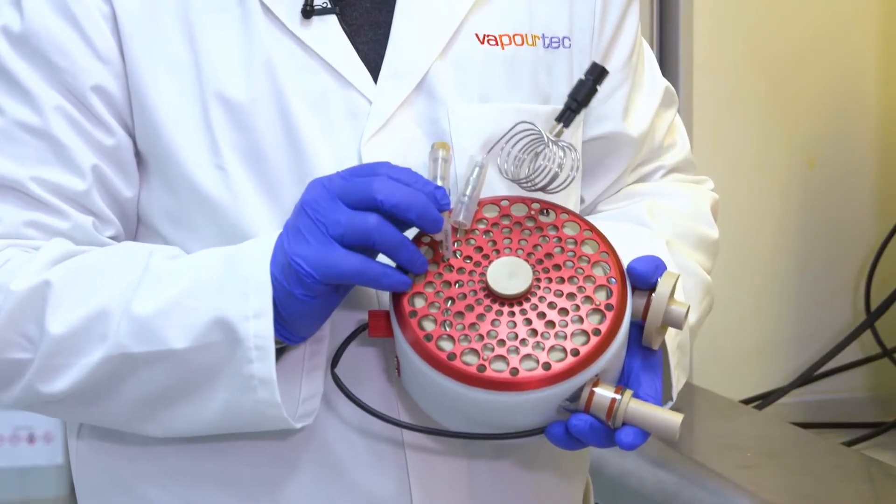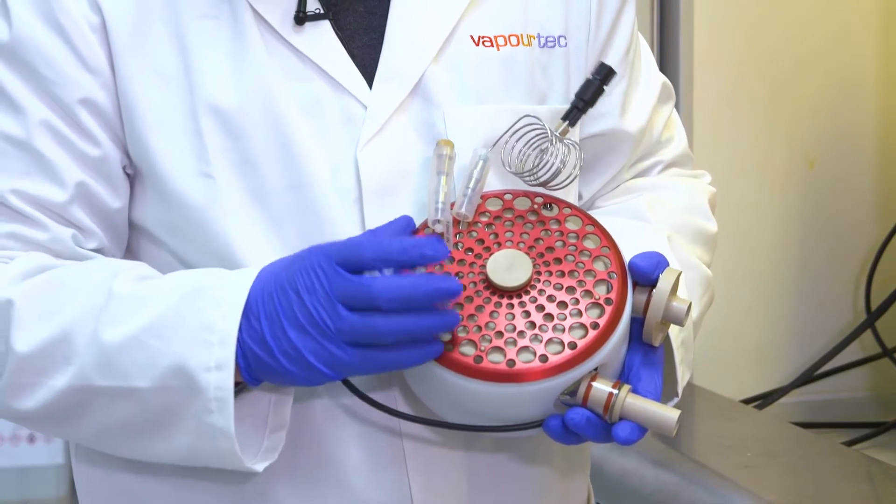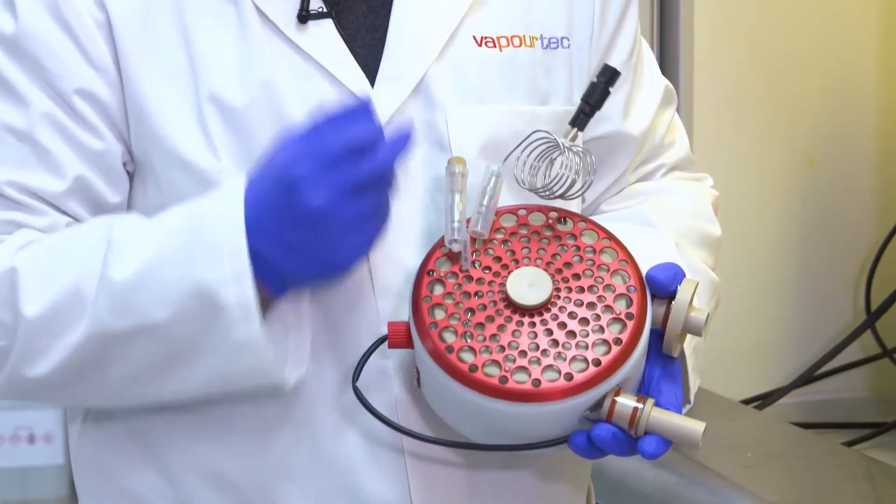On the inlet line you have a check valve and this is very important because it prevents any solvent boiling and traveling backwards out of the reactor.